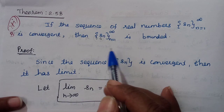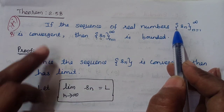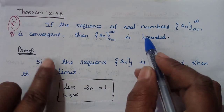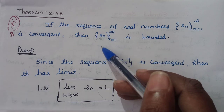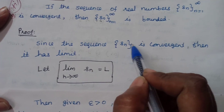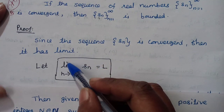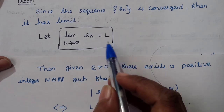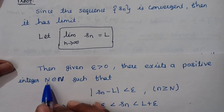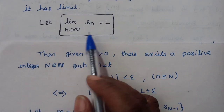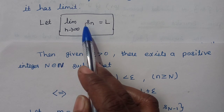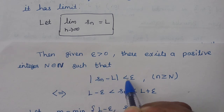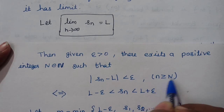Now the main theorem: if the sequence of real numbers {Sn} is convergent, then the sequence is bounded. Convergent sequence implies bounded. Proof: since the sequence {Sn} is convergent, it has a limit L. So lim(n→∞) Sn = L. By definition, for every ε > 0, there exists a positive integer N such that |Sn - L| < ε for all n ≥ N.